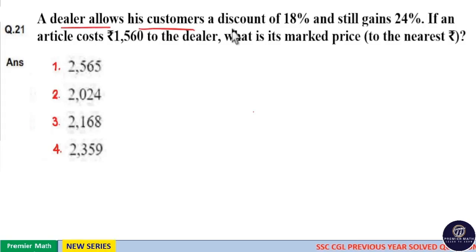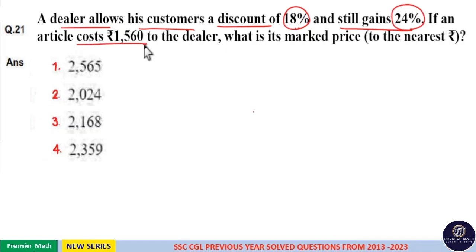A dealer allows his customers a discount of 18% and still gains 24%. If an article costs Rs. 1560 to the dealer, what is its marked price?